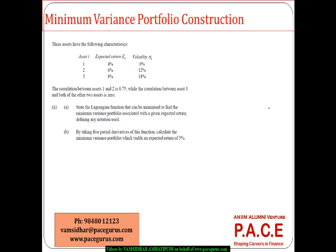Let us look at one quick calculations-related example for computing the minimum variance portfolio. For this, three assets have the following characteristics: these are the expected returns, these are the volatilities of each of the assets. The correlation between asset 1 and 2 is 0.75, while the correlation between asset 3 and both others — correlation between 1 and 3 is 0, and correlation between 2 and 3 is also 0.